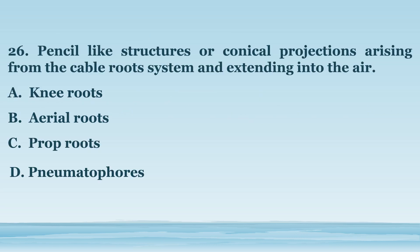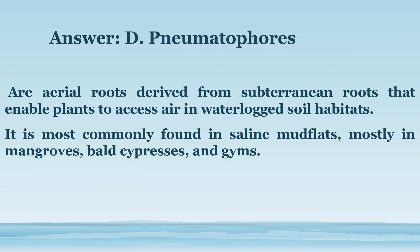Number 26. Pencil-like structures or conical projections arising from the cable root system and extending into the air. A. Knee roots. B. Aerial roots. C. Prop roots. D. Pneumatophores. The answer is letter D. Pneumatophores. Are aerial roots derived from subterranean roots that enable plants to access air in waterlogged soil habitats. Most commonly found in saline mudflats, mangroves, bald cypresses, and gyms.